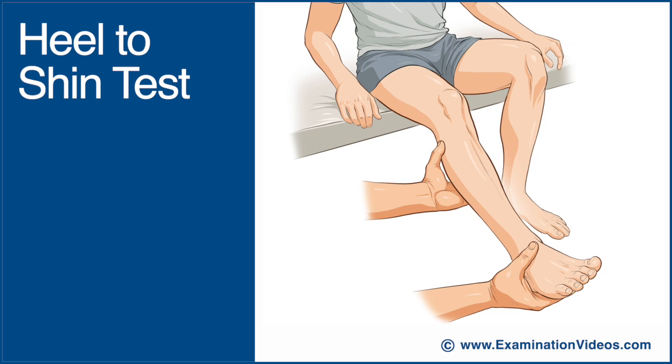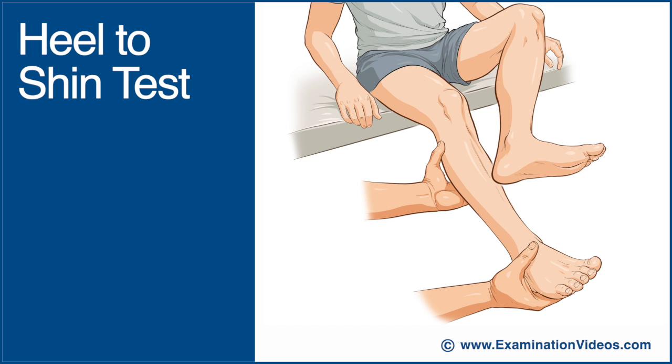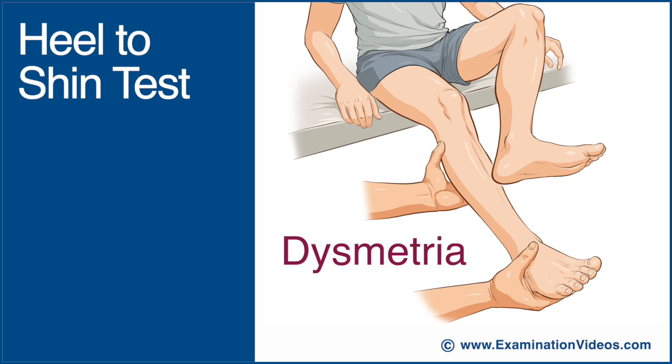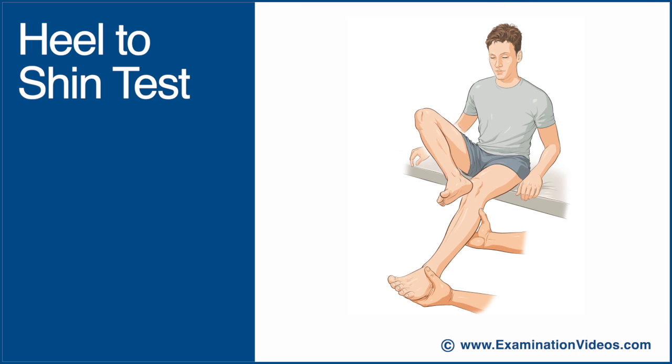If the patient is unable to control the movement accurately, this is called dysmetria and suggests cerebellar dysfunction. Repeat the test with the opposite leg.